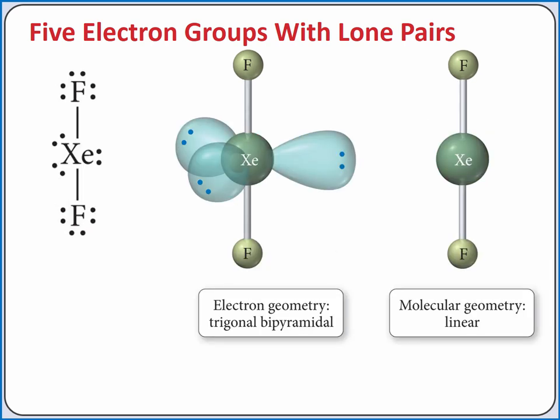If we have two bonding groups and three lone pairs of electrons on the central atom, our molecular geometry becomes linear. Xenon difluoride has a linear molecular geometry. All three lone pairs of electrons are again in the equatorial positions.